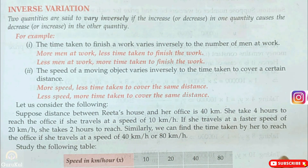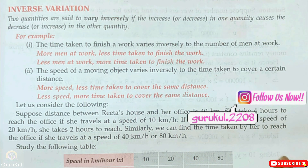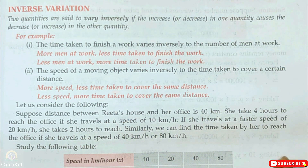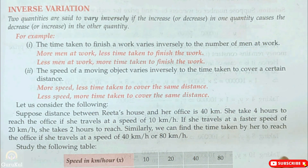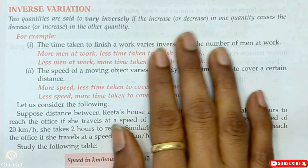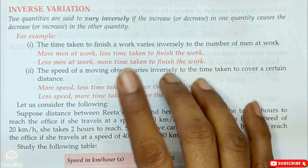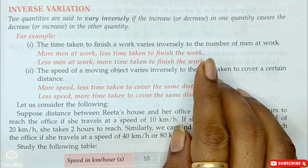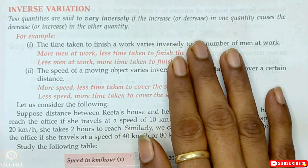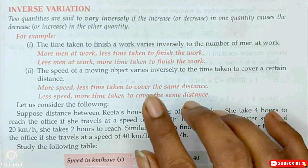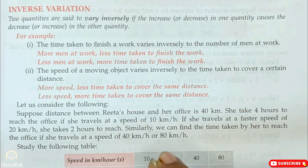Today I am going to start with exercise 9.2 which deals with inverse variation. Let me explain what inverse variation is. It is defined as when two quantities are said to vary inversely — that is, if the increase in one quantity causes a decrease in the other quantity, or vice versa, meaning a decrease in one quantity causes an increase in the other.